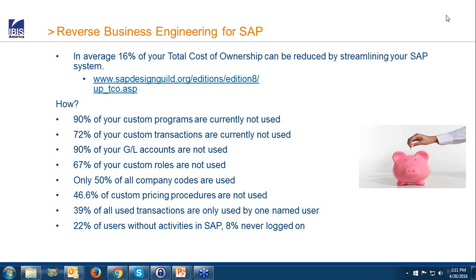We have some key statistics. When we analyze SAP systems, we find lots of unused or obsolete custom enhancements like custom programs and transactions. Master data is not up to date or not used. Authorizations and roles are obsolete. Organizational units are no longer needed. All that will help to reduce your TCO.